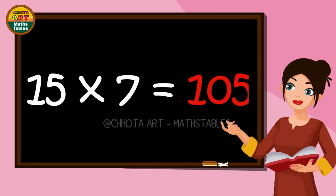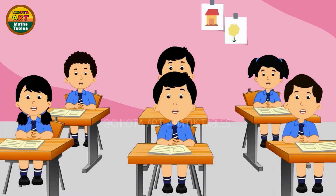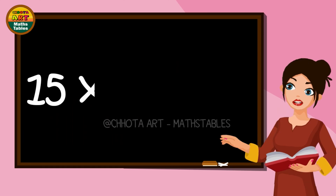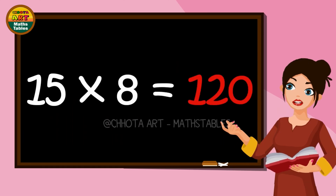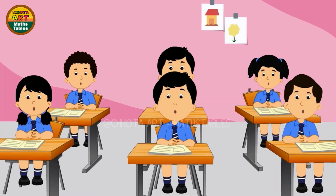Fifteen sevens are a hundred and five. Fifteen eights are a hundred and twenty.